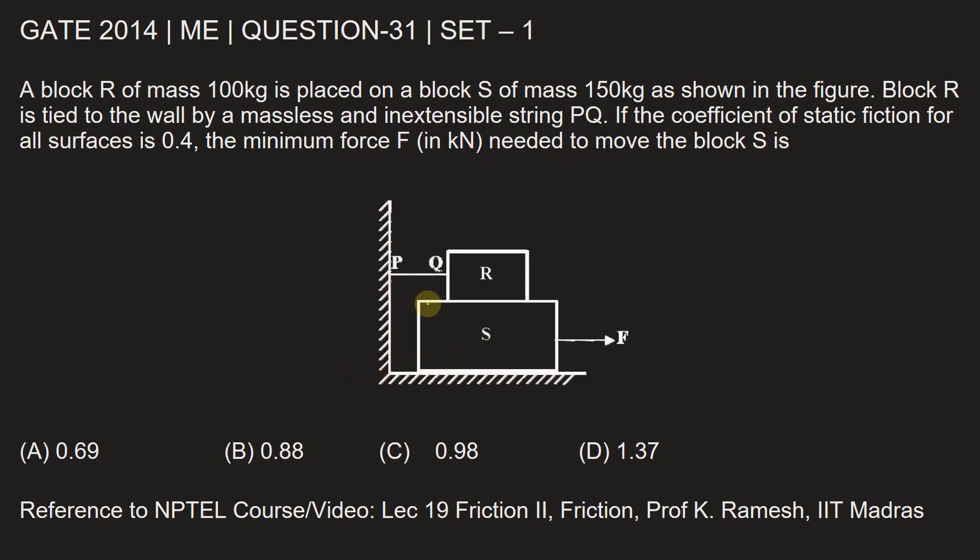So this is the situation given where there are two blocks R and S being arranged like this and R is being tied with the massless string PQ. Also a force F is being applied to S and we are required to find out the force F in kilonewton. This coefficient of static friction is given 0.4.